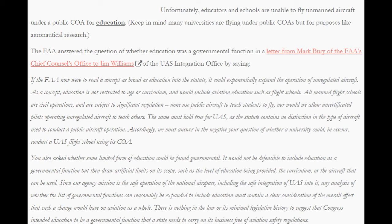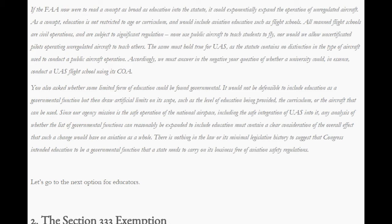The FAA stated: your question of whether the university could conduct a UAS flight school using its COA — you also ask whether some limited form of education could be found governmental. It would not be defensible to include education as a governmental function and then draw artificial limits on its scope, such as the level of education, the curriculum, or the aircraft used. Since our agency mission is the safe operation of the national airspace, there is nothing in the law or its legislative history to suggest that Congress intended education to be a governmental function free of aviation safety regulations.